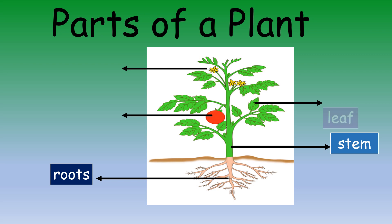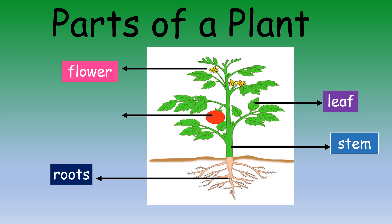This is the leaf. The leaf makes food for the plant and is also known as the kitchen of the plant. This is the flower. The flower grows into a fruit, and fruits have seeds which can later grow into new plants. So children, we have learned about the different parts of a plant and their functions.